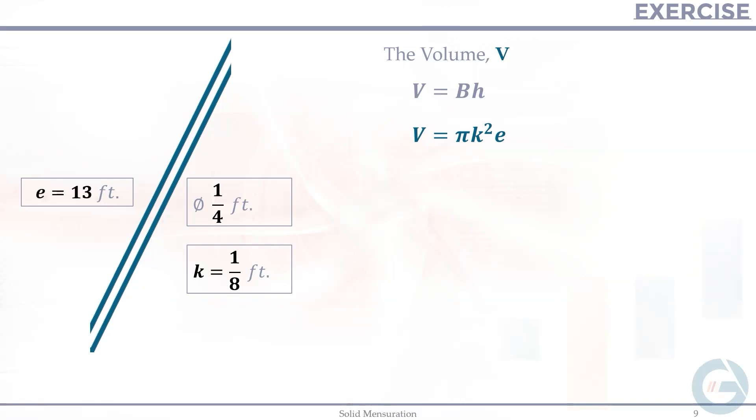Let's plug in these values. So we have volume equals pi times 1 eighth squared times e, which is 13 feet. And this will give us the volume of the pipe, which is 13 pi over 64 cubic feet.